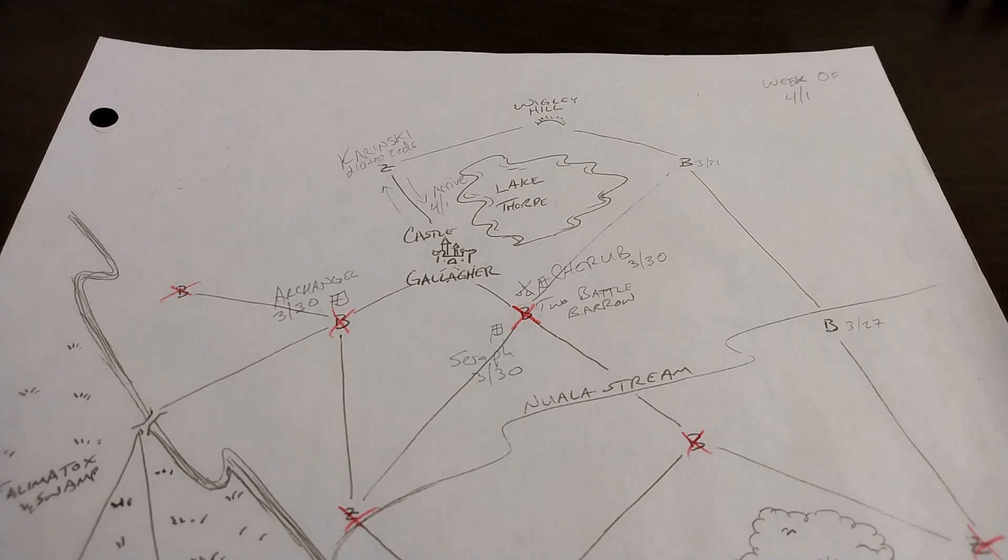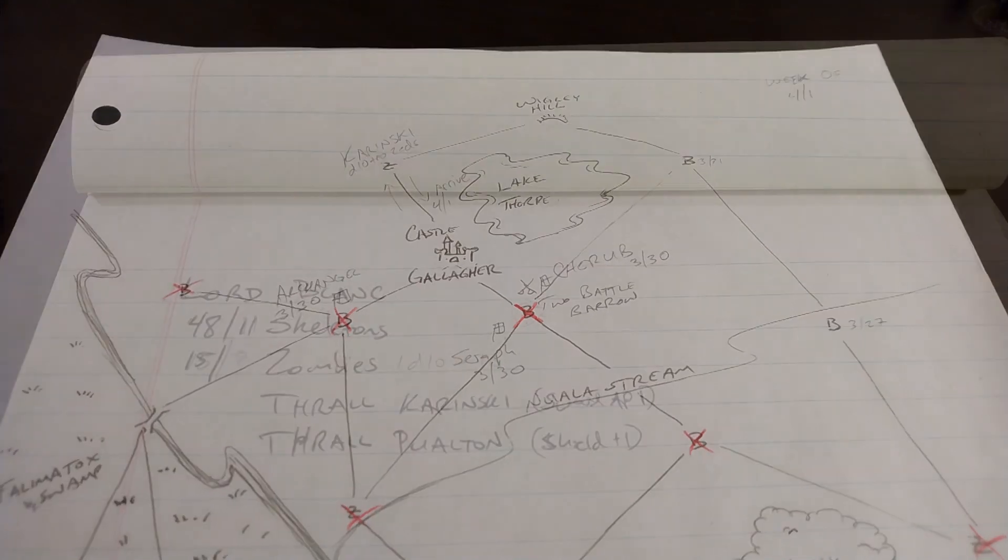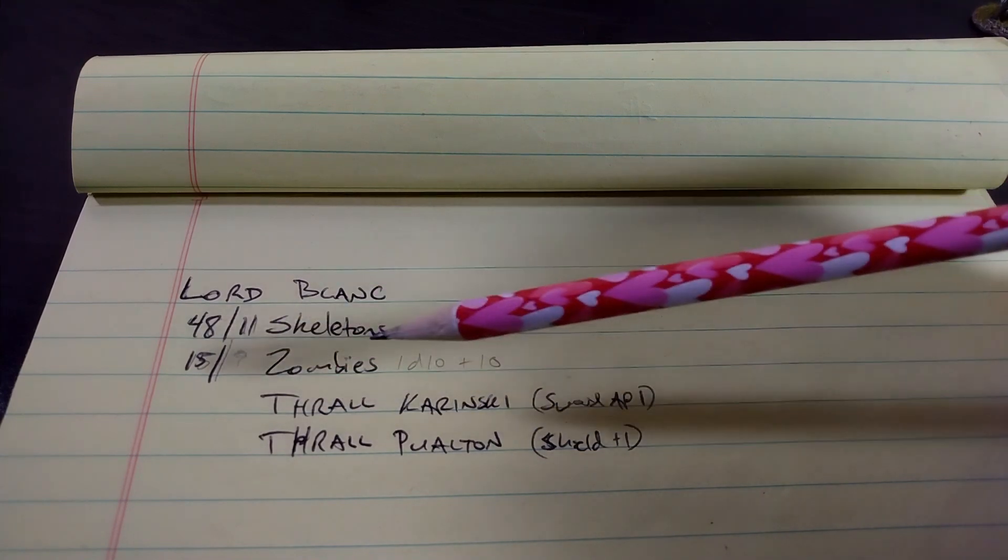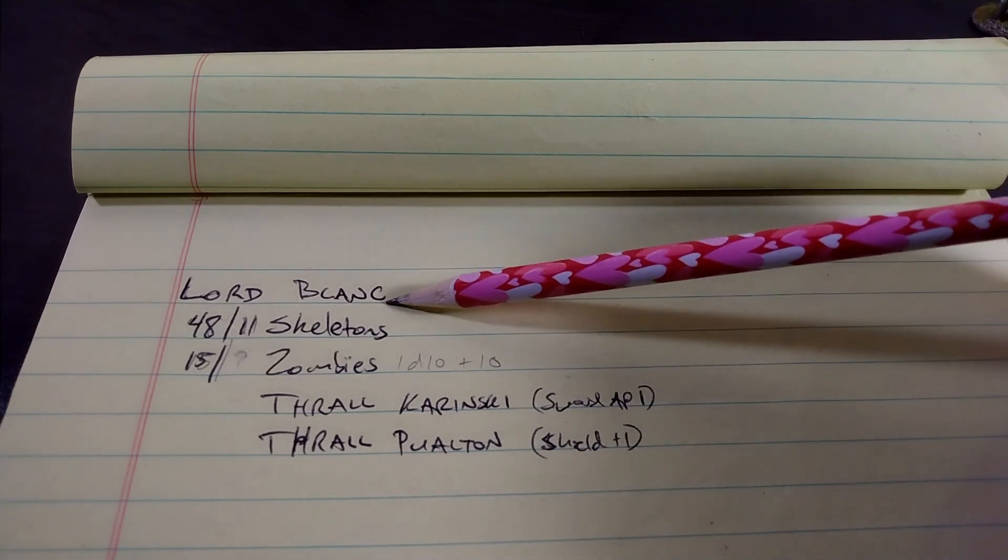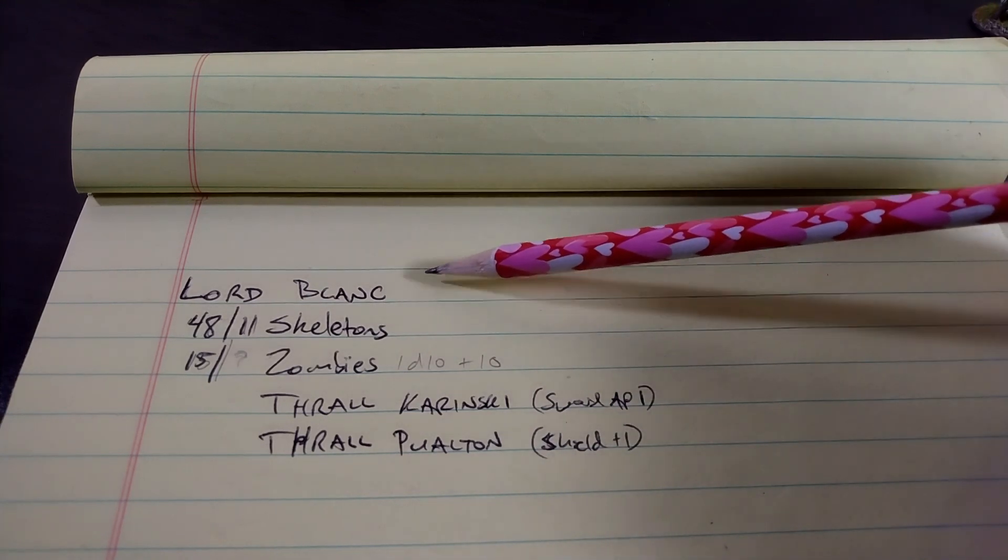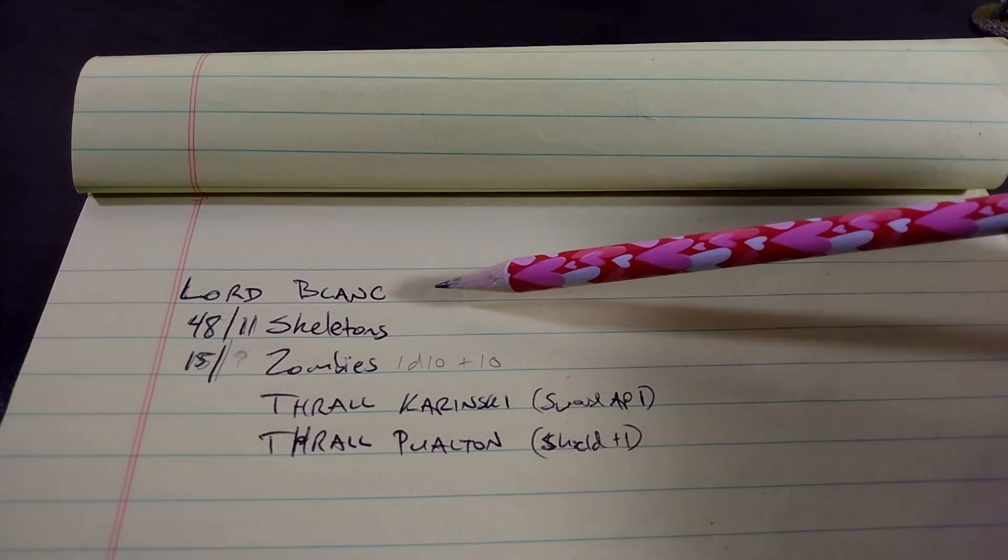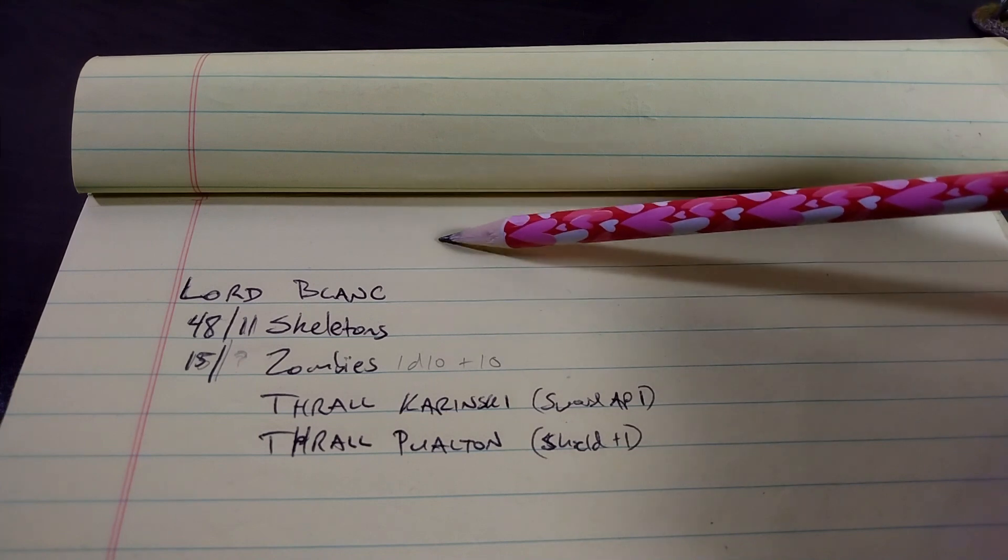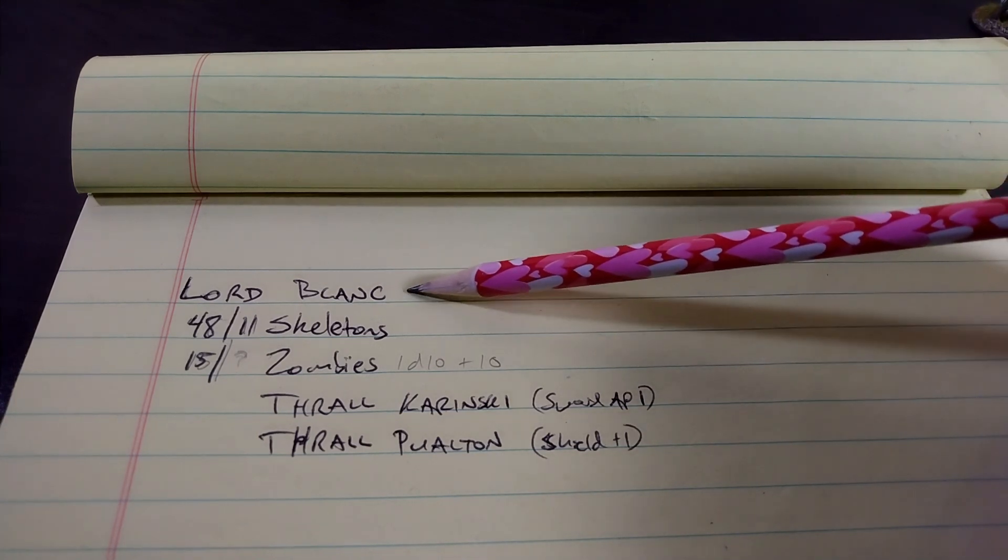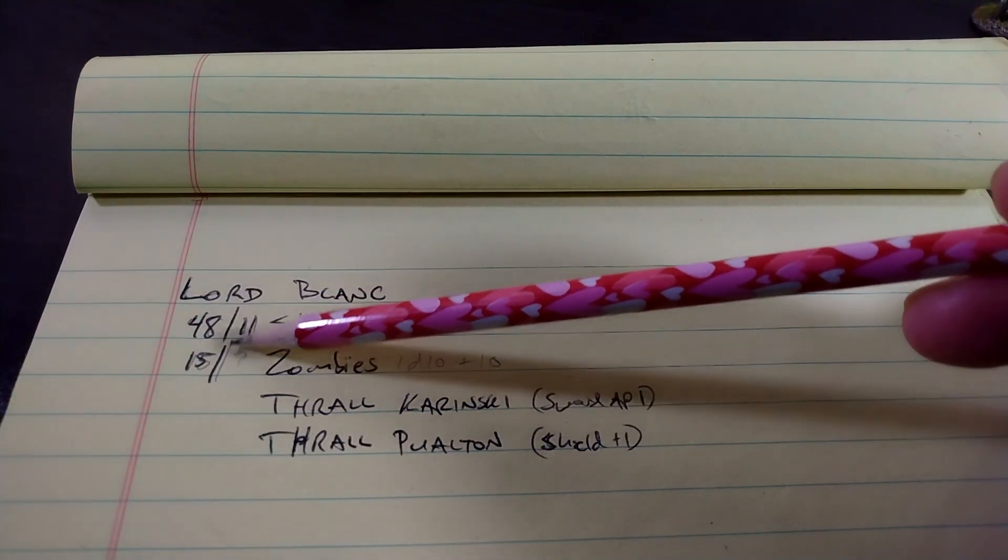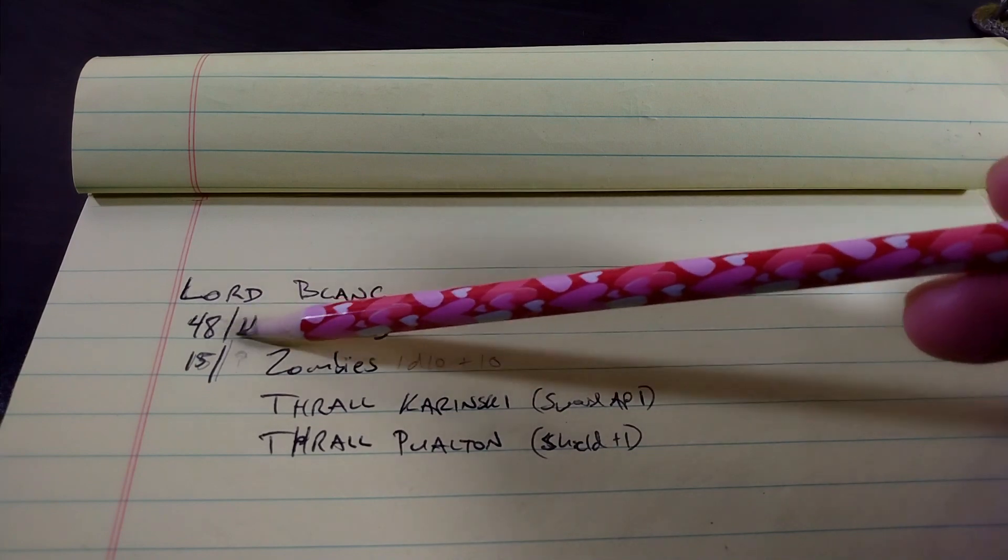The first thing we should talk about is what the forces look like that will be participating. And if we step back and kind of run the numbers, take a little census, Lord Blanc is only down to 49 skeletons and 15 zombies. He does have two thralls, also himself. Now, Lord Blanc is a vampire lord, is a level 3 spellcaster. But he is going up against High Priest Rickley and the battle mage, Magram, who are level 3 and level 2. So when it comes to the siege, he is grossly outclassed. But there's something else we need to think about.